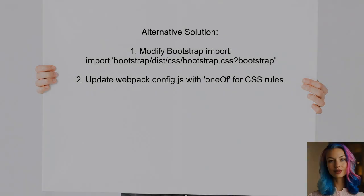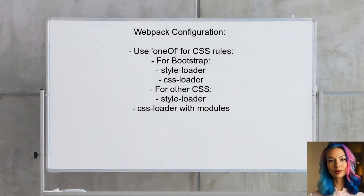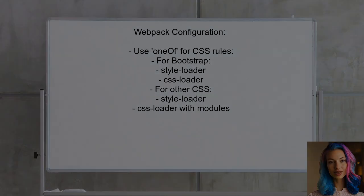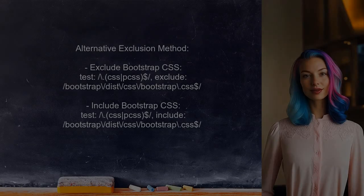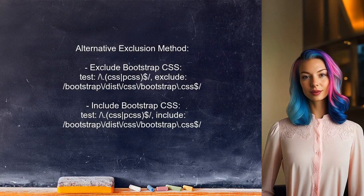An alternative approach involves modifying the import path for Bootstrap CSS. By adding a query to the import statement, you can differentiate Bootstrap styles from your CSS modules. In the Webpack configuration, you can set up rules to handle Bootstrap separately, using one-off to specify different loaders based on the resource query. Alternatively, you can exclude Bootstrap CSS from CSS module processing by using include and exclude options in your Webpack rules.